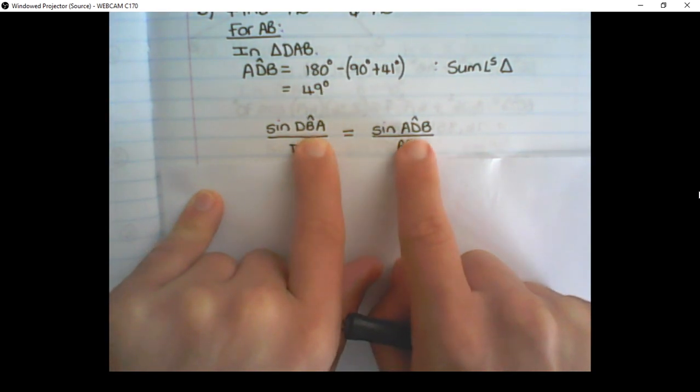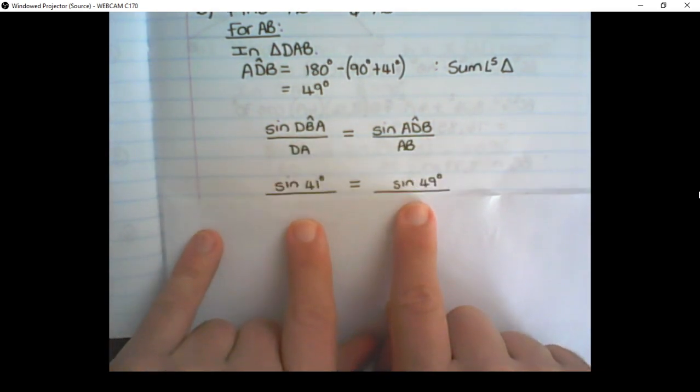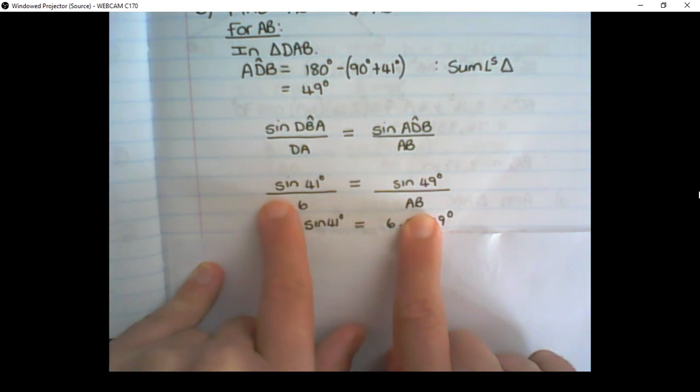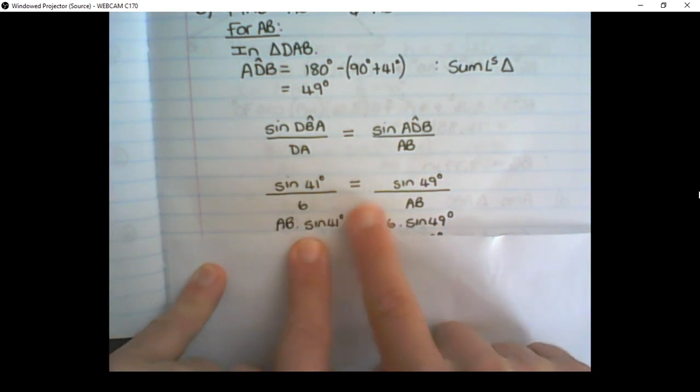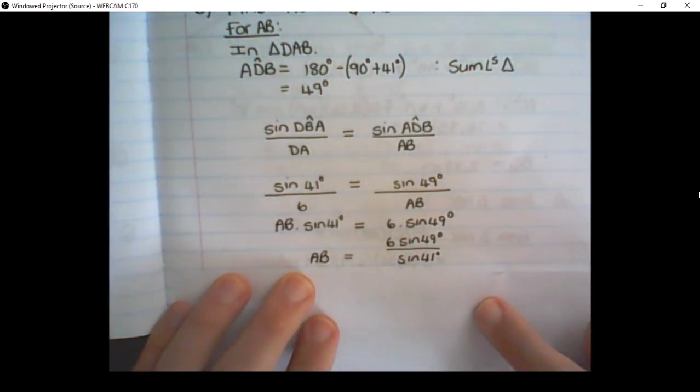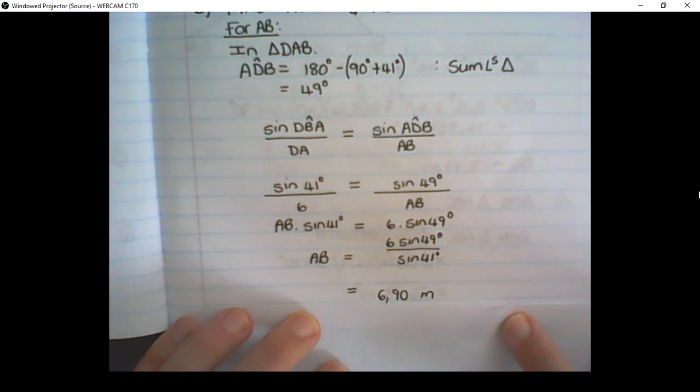and angle ADB is 49 degrees. If I substitute all of those values in, I have two ratios equal to each other. I cross multiply, so AB times sine of 41, and 6 times the sine of 49, and then to get AB alone, I just divide the 6 sine of 49 with sine of 41, and simplifying, I find that AB is 6.90 meters.